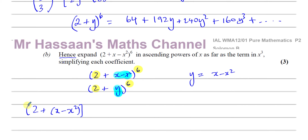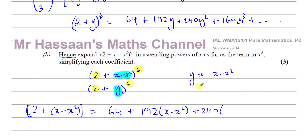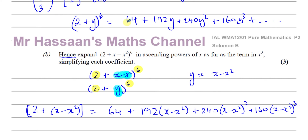If I take 2 + (x − x²) and put it inside the part A expansion, then instead of writing y I can replace it with x − x². So 64 + 192(x − x²) + 240(x − x²)² + 160(x − x²)³. We want the expansion as far as x cubed terms, so we only need to go up to x³. This is question 4 from the Solomon F paper.